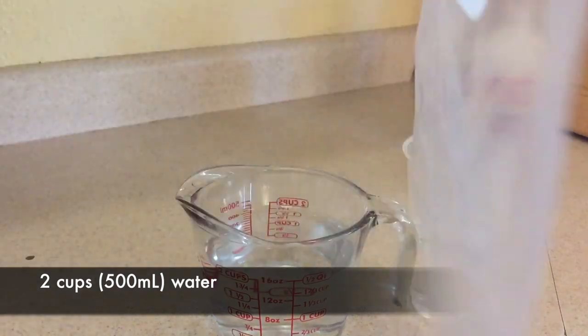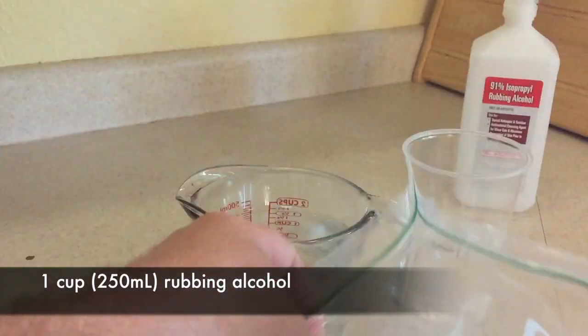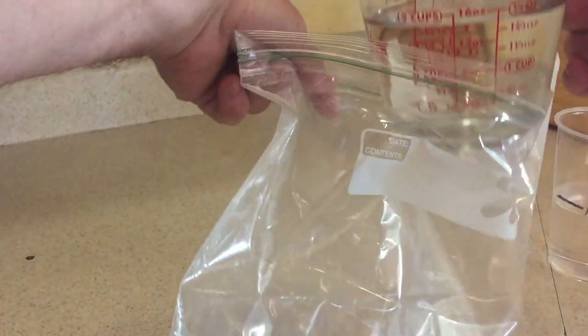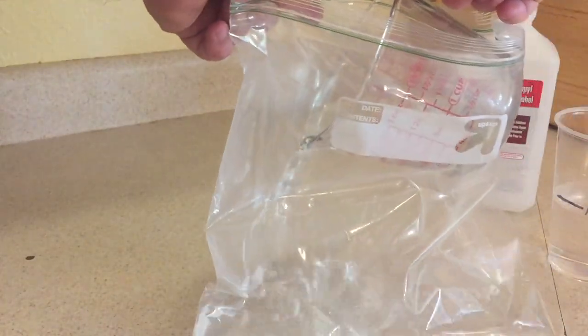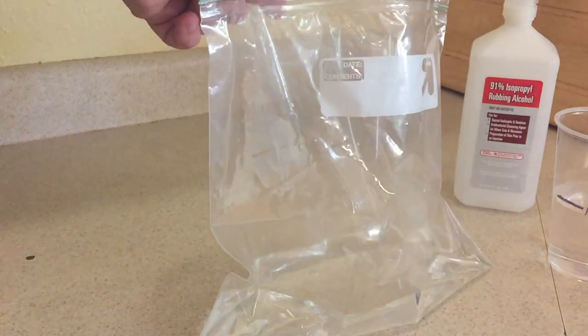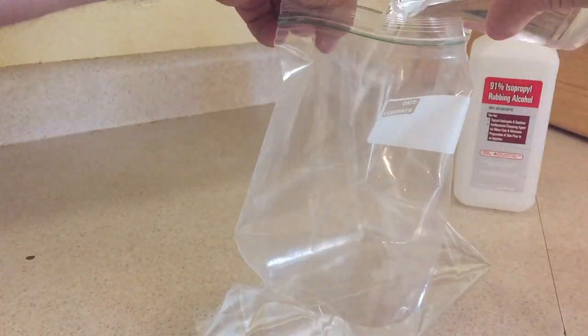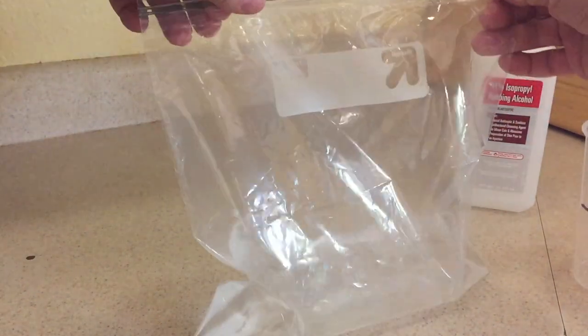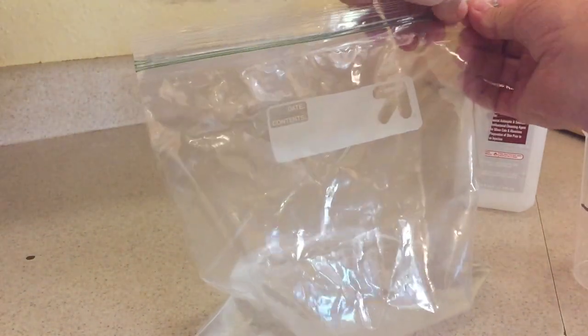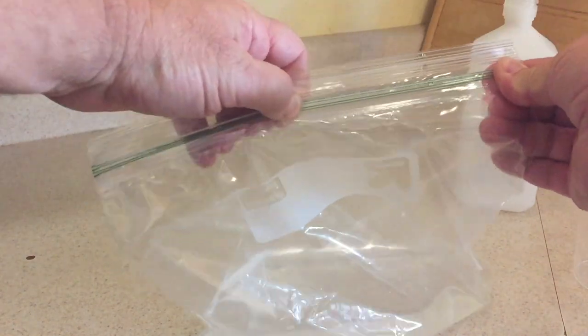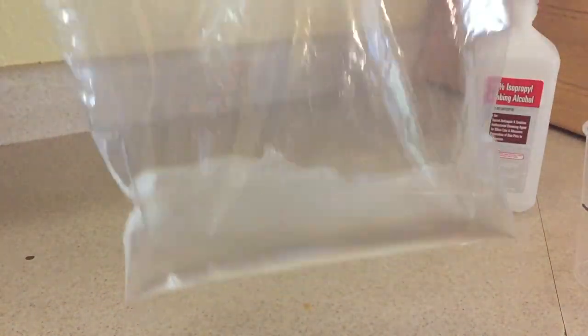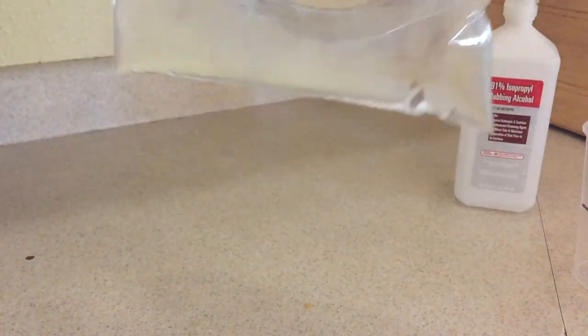Take your Ziploc freezer bag. I'm using a one gallon, you could use a quart size which would actually be perfect. Pour the two cups of water into the bag itself, and then pour the one cup of rubbing alcohol. Then take most of the air out of it and seal it up. You don't want to have a lot of air in there. If there's too much air, reopen it up and squeeze out the air.